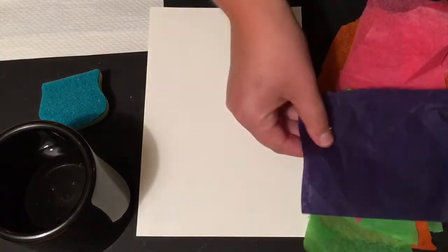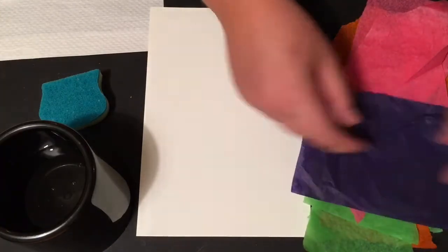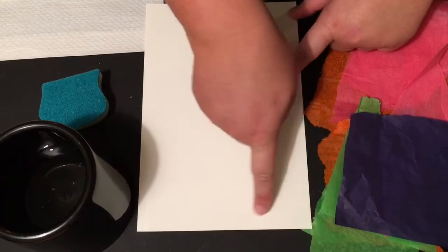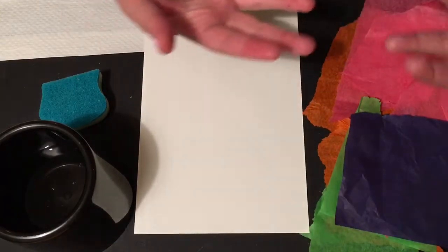Now you are going to take your colored tissue paper and rip it into pieces. When you have it ripped into the pieces, you are going to start placing those pieces on your watercolor paper randomly so it just looks like a collage.